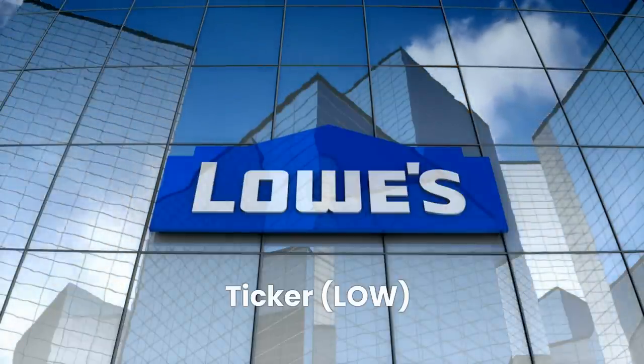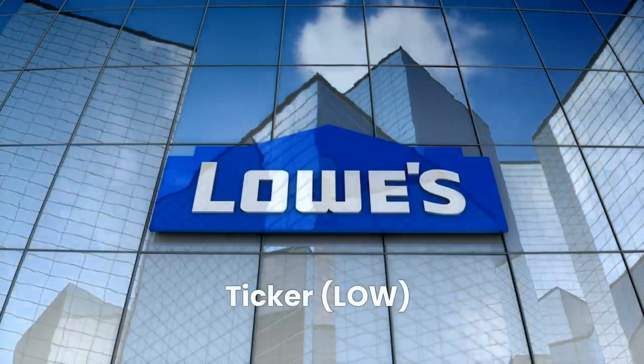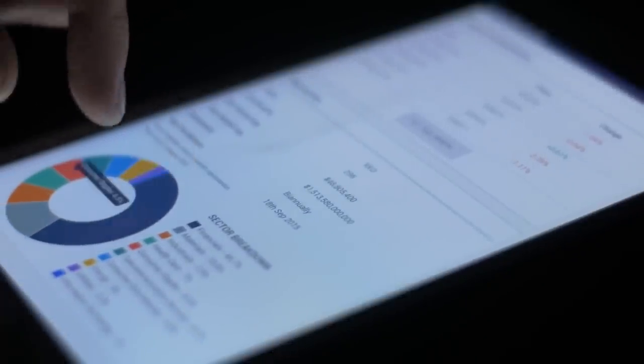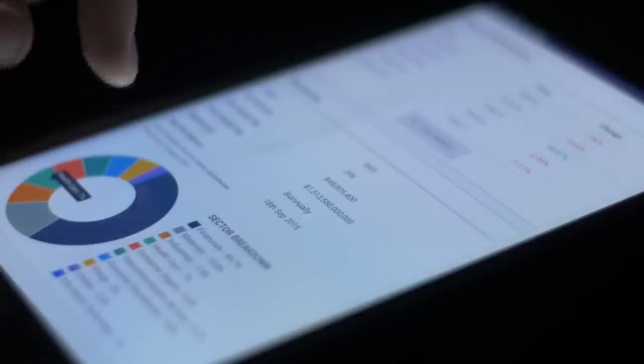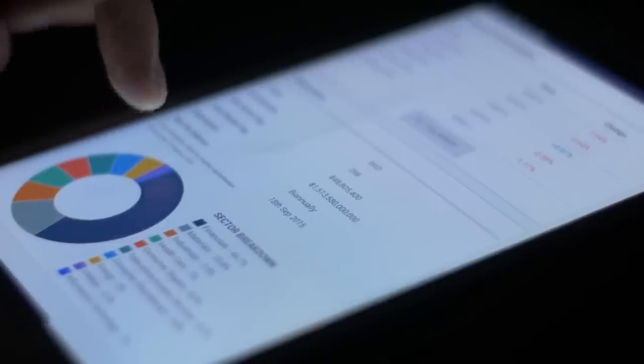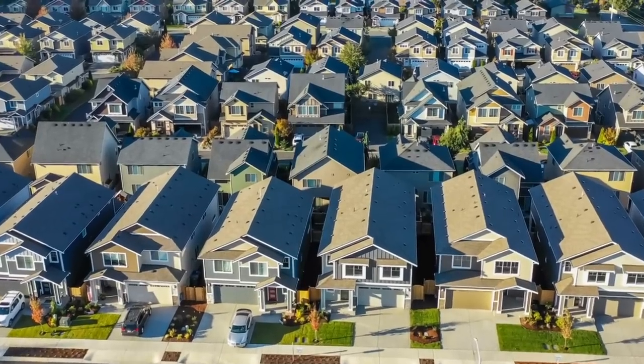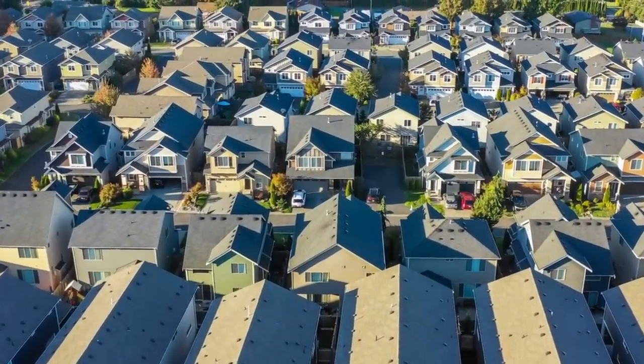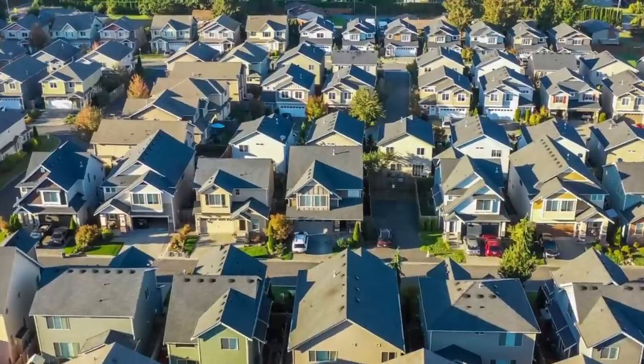Number 3. Lowe's, ticker LOW. The home improvement giant may not seem like a very exciting stock. And that's true unless you like dividend growth. The company has raised its dividend every year since going public in 1961 and has raised the payout a massive 471% over the past decade alone. Another important number that's good for Lowe's is that the average US home is 37 years old. The next generation of do-it-yourselfers will spend a lot of money at Lowe's.